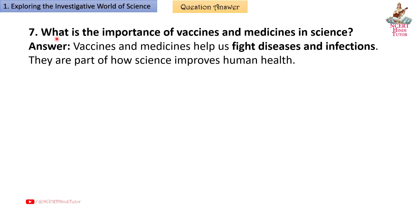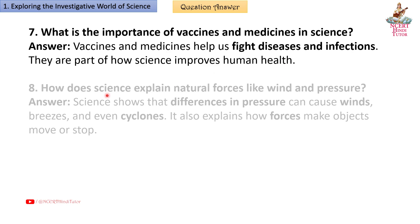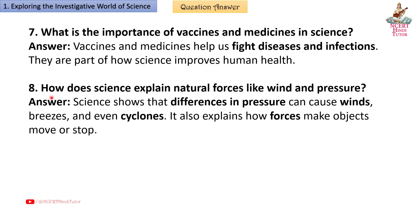Question 7: What is the importance of vaccines and medicines in science? Answer: Vaccines and medicines help us fight diseases and infections. They are part of how science improves human health.